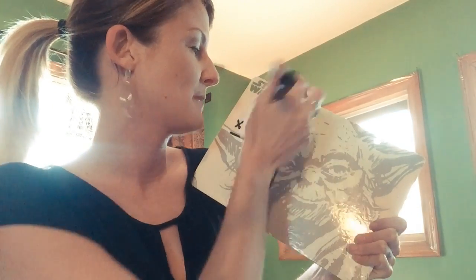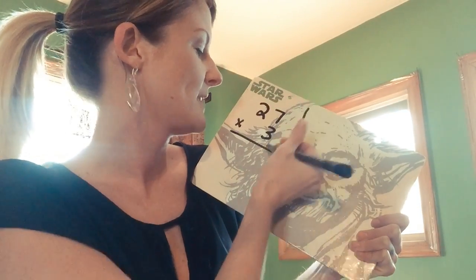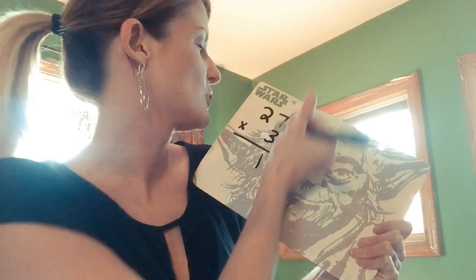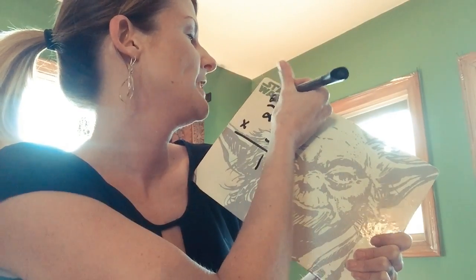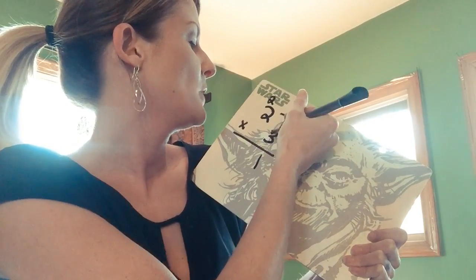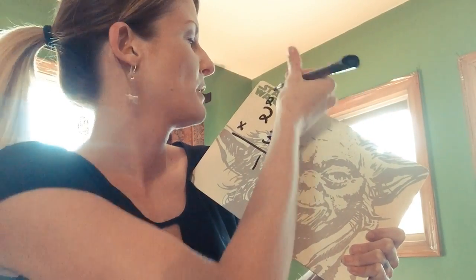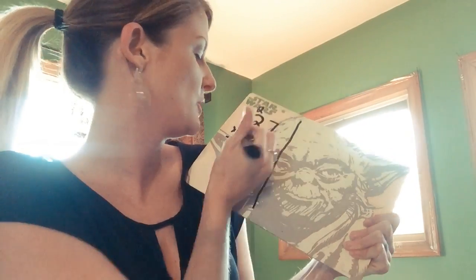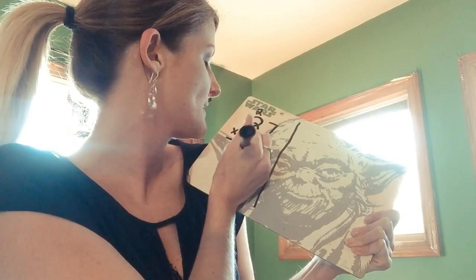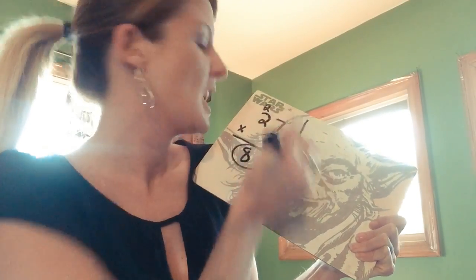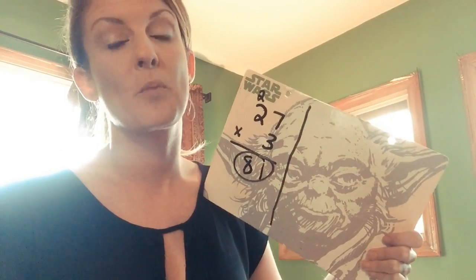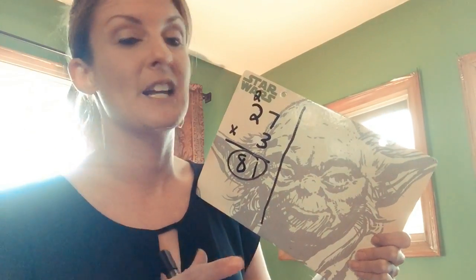So 27 times 3: 7 times 3 gives us 21, 2 times 3 gives us 6, plus that 2 gives us our answer of 81. Now we're going to go ahead and solve it with the box technique.